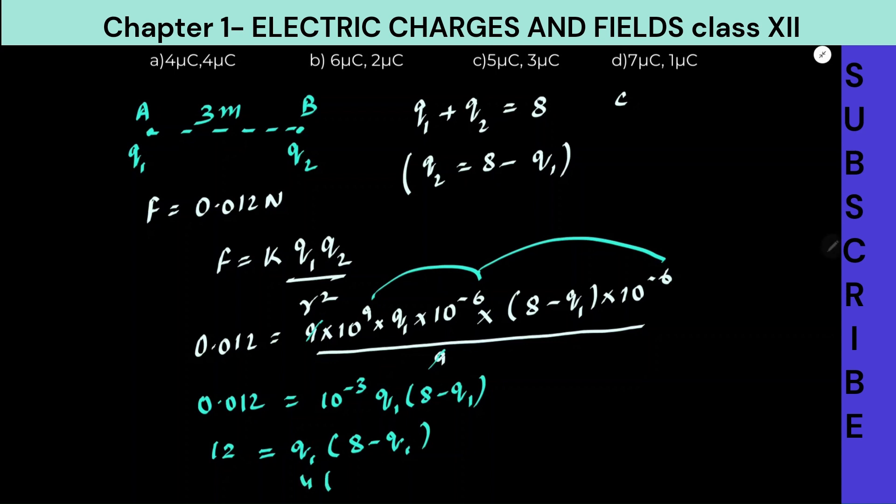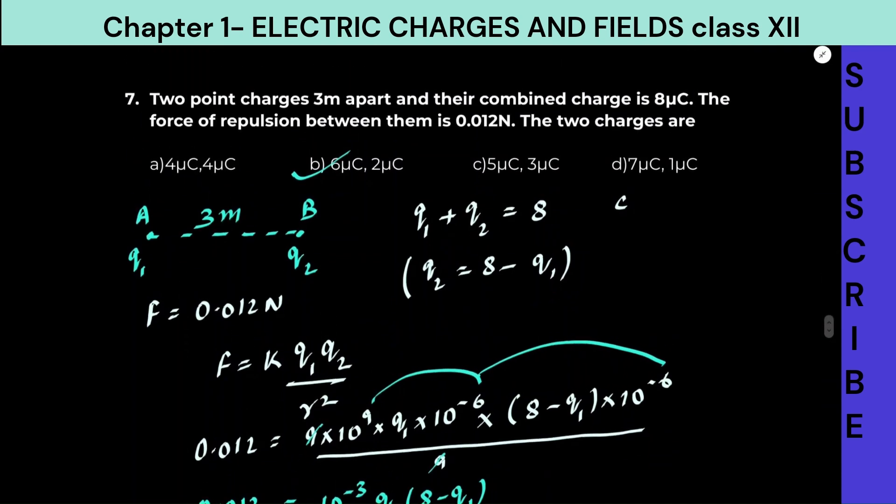What is our first option? 4. If I put it here, 4 into 8 minus 4, that will give us 16. That is not correct. If I put the second option, that will save time. Instead of solving quadratic equation, it will save time. So it is 6 into 8 minus 6, which is 2. Yeah, so second one is correct. Option B is correct. That is 6 microcoulombs and 2 microcoulombs. I hope this is clear.